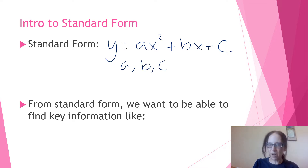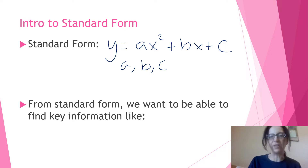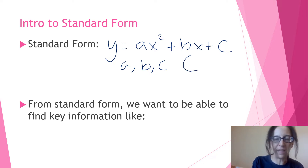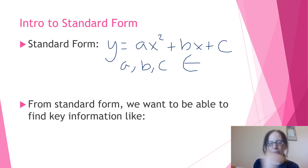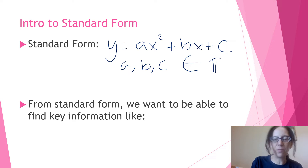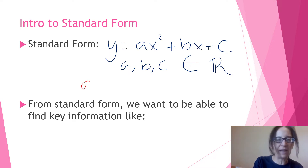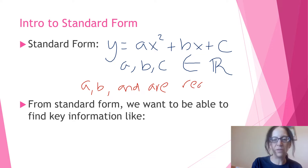I'm going to put some notation up on the screen and then interpret it so you know what you're writing down. There's a funny-looking symbol — it looks like a c with a horizontal line coming in — and that means a, b, and c are real numbers. That's essentially what that means.